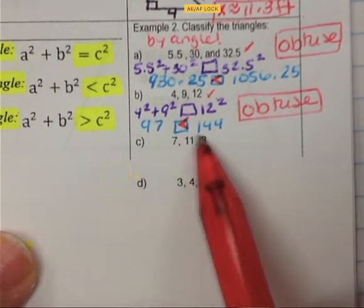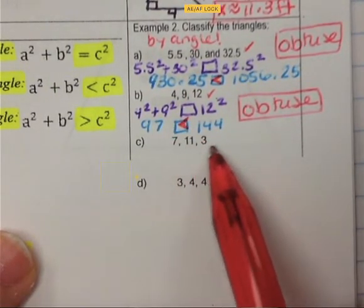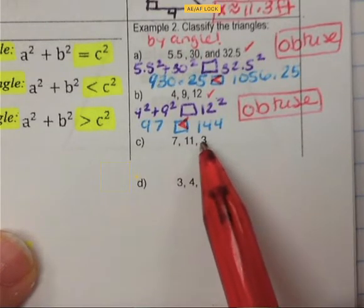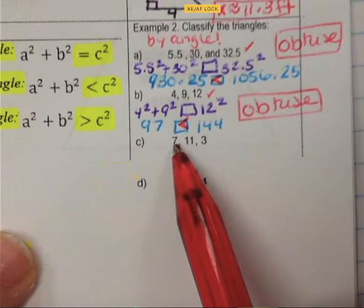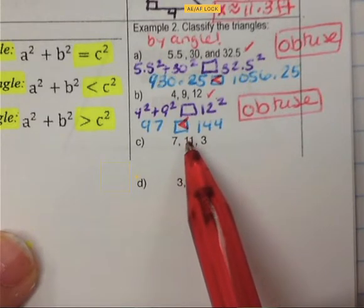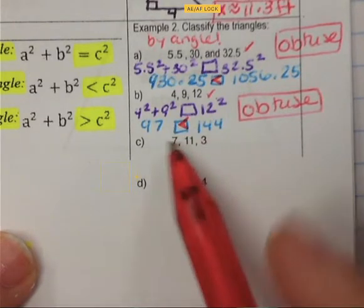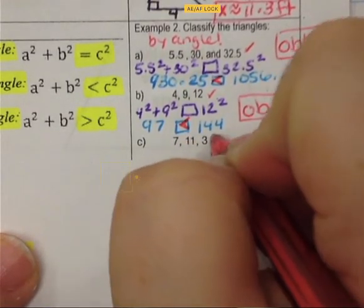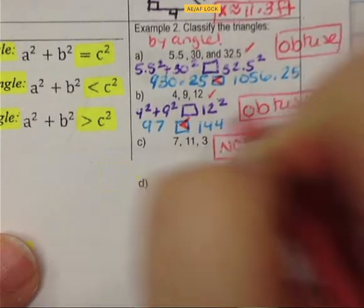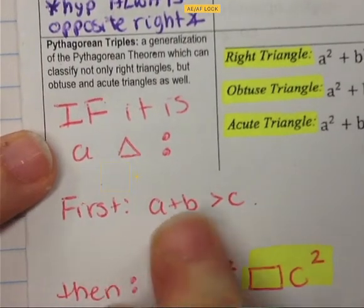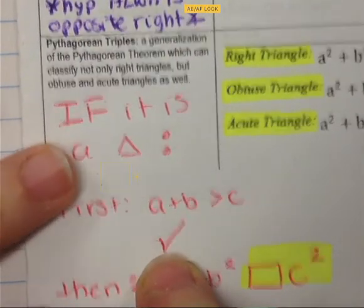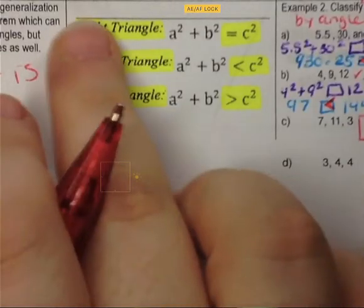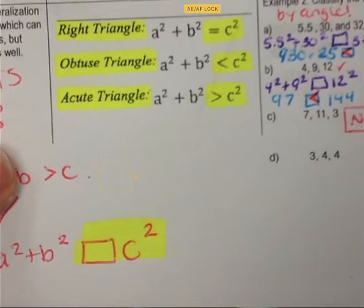Example C: the numbers are not in order, so the two smaller sides are 3 and 7. 3 plus 7 is 10, and 10 is not bigger than 11, so we can't go any further — this is not even a triangle. We cannot classify it as right, obtuse, or acute because it's not a triangle at all.